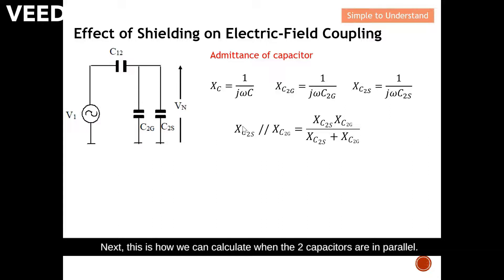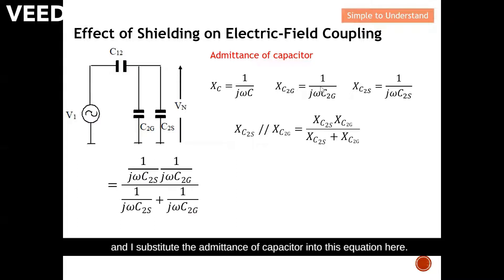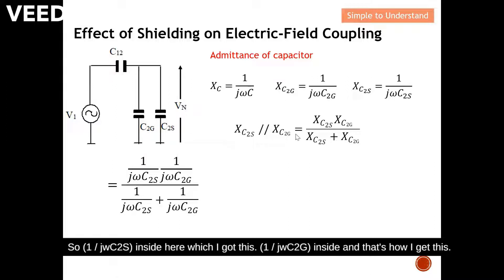Next, this is how we calculate when two capacitors are in parallel — this is what we learned in our school days. I substitute the admittance of each capacitor into this equation: one over jωC2S goes in here, and one over jωC2G goes in there, and that's how I get this expression.